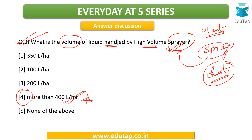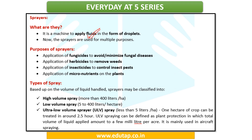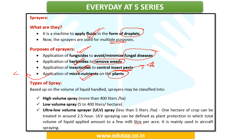A sprayer is a machine to apply fluids in the form of droplets. Sprayers are used for applying fungicides to eliminate fungal diseases, herbicides to remove weeds, insecticides to control insect pests, and micronutrients on plants. Based on the volume of liquid handled, sprayers are classified into three categories: high volume sprayer (more than 400 liters per hectare), low volume sprayer (5 to 400 liters per hectare), and ultra low volume (ULV) sprayer (less than 5 liters per hectare). Kindly make note of this classification.